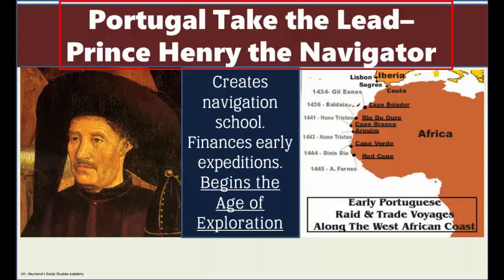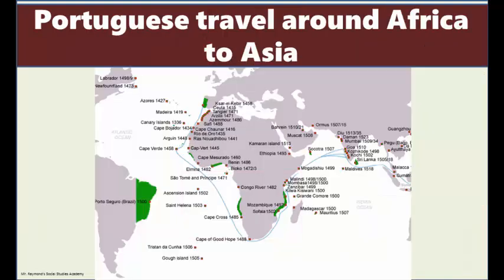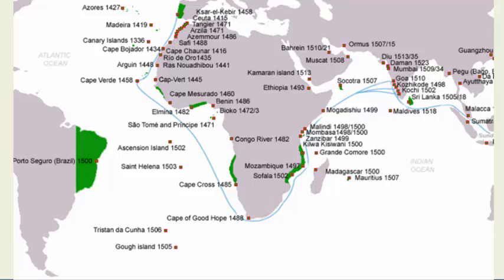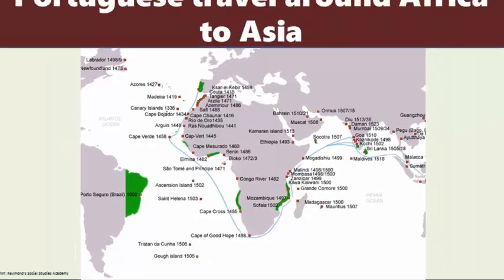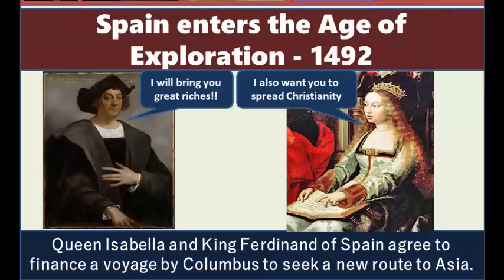Portugal took the early exploration lead, backed by one of their rulers, Prince Henry the Navigator, a patron who created a navigation school and financed early expeditions along the coast of Africa. With these voyages, the Age of Exploration had begun. The Portuguese explored the coast of Africa starting in the early 1400s, and this led eventually around the Cape of Good Hope at the southern tip of Africa, providing a sea route to those sought-after Asian ports. You can also see from this map that in 1500, just eight years after Columbus' voyage, the Portuguese discovered Brazil in South America.